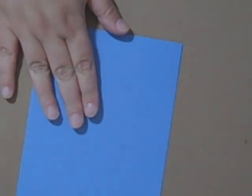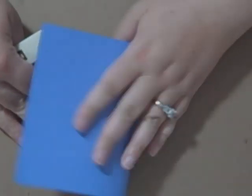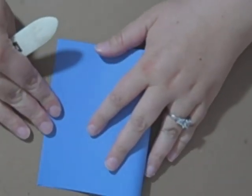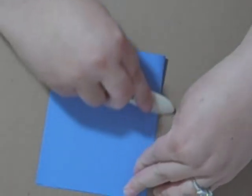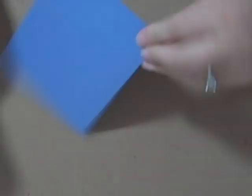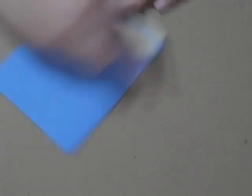We're just going to be doing some fun stuff. So let's go ahead and start with the card base. I'm just going to fold this over and use my bone folder to score it.